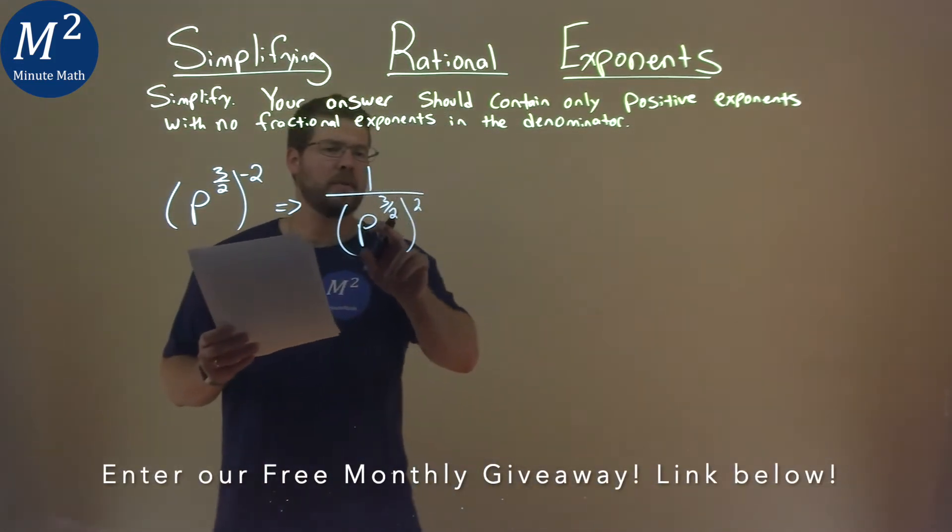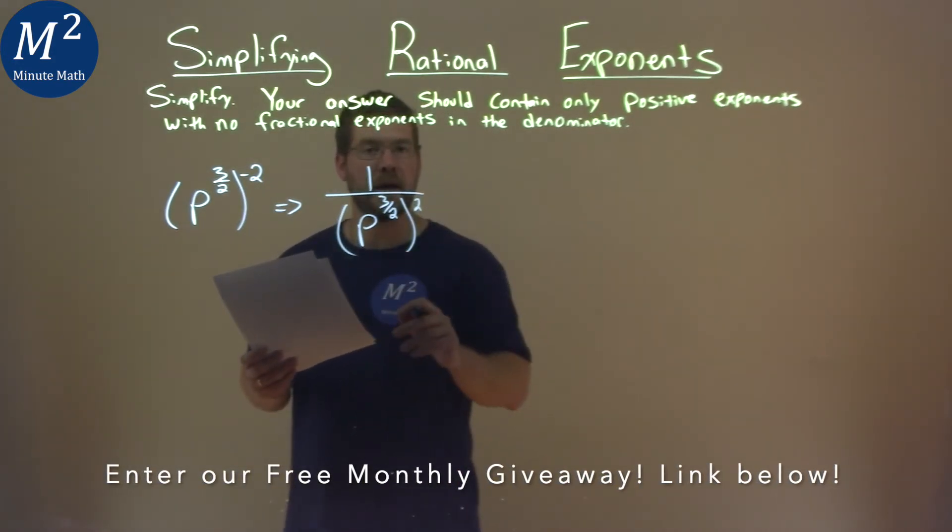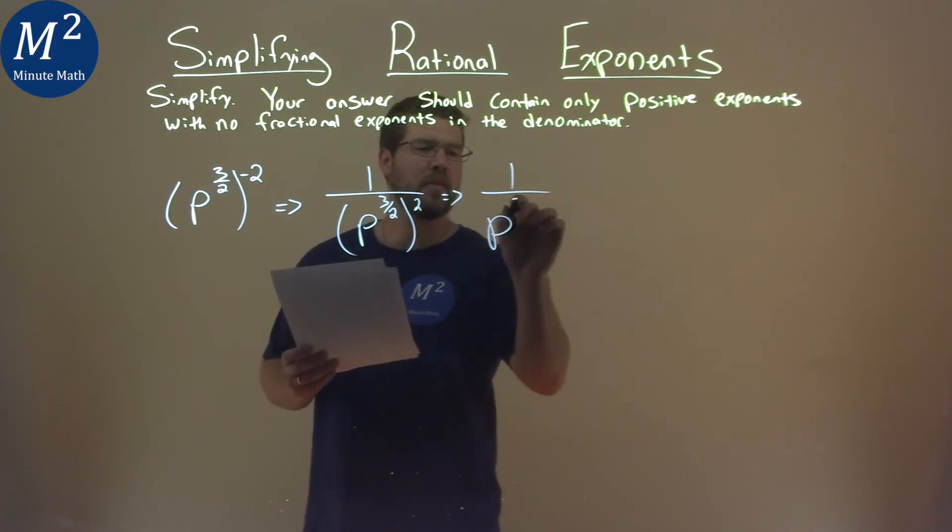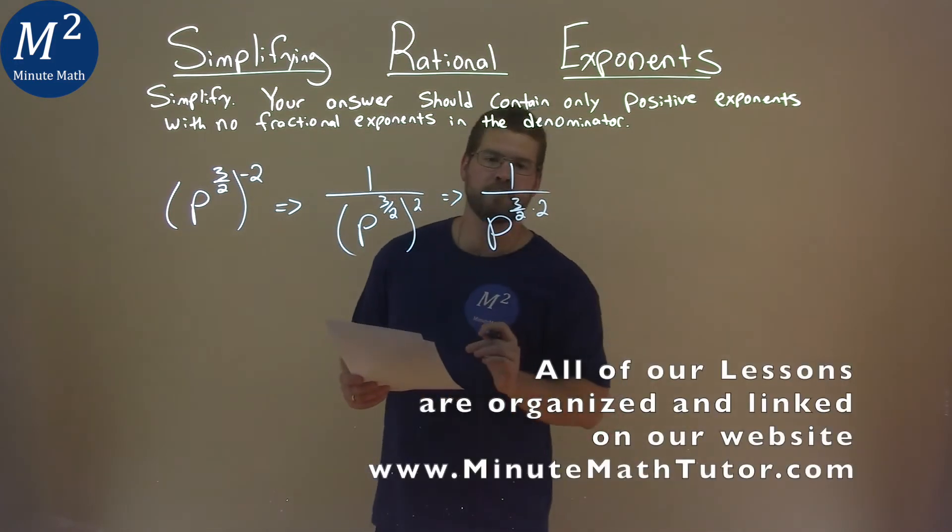And our rules with these exponents is that we have to multiply the 2 by the 3 halves, so keep on going. We have 1 over p to the 3 halves times 2 here. Not too bad.